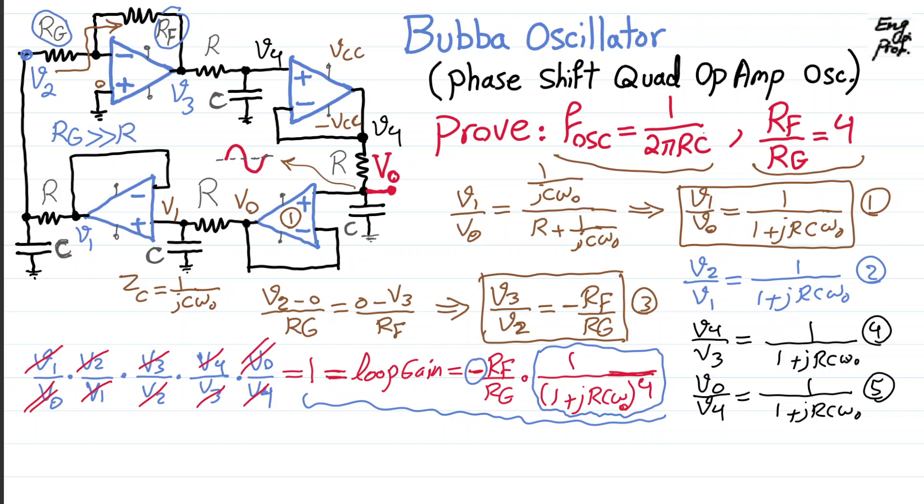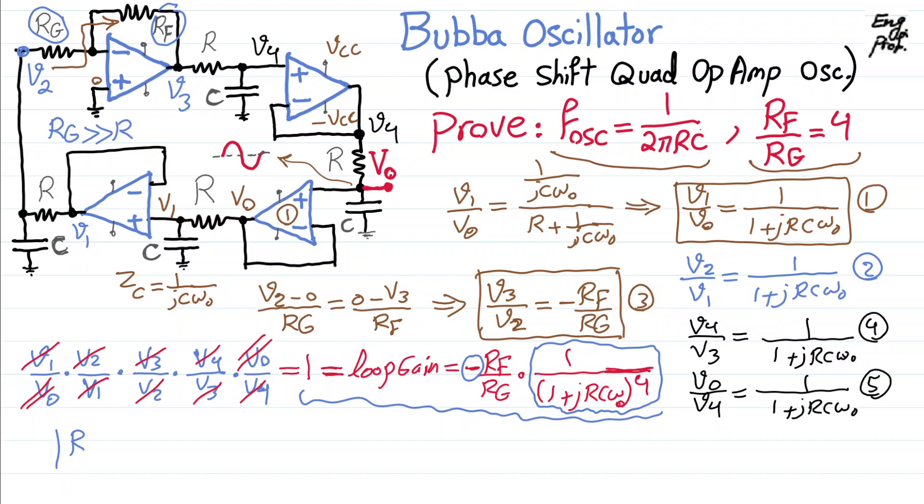Okay, so what I can say is, since we want this whole thing to be equal to 1, effectively what we are saying is absolute value of R_F over R_G should be equal to absolute value of 1 plus jRCω naught to the power 4. So, that's one thing. That's satisfying the amplitude.